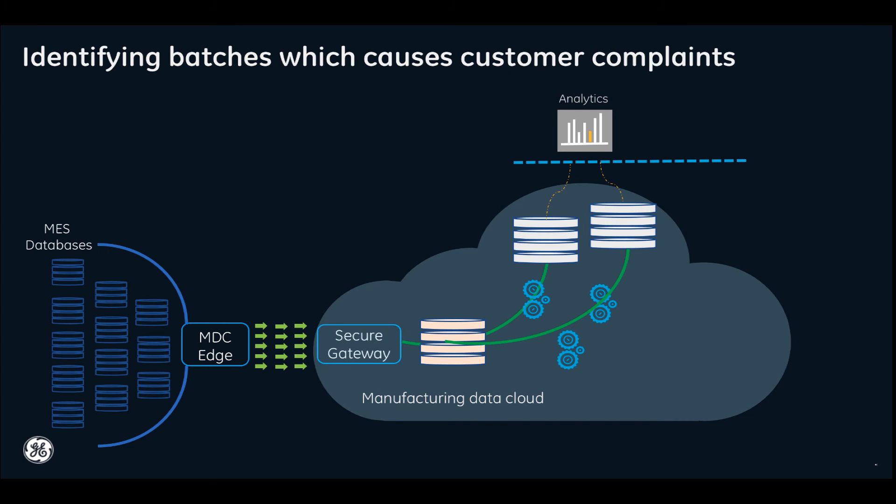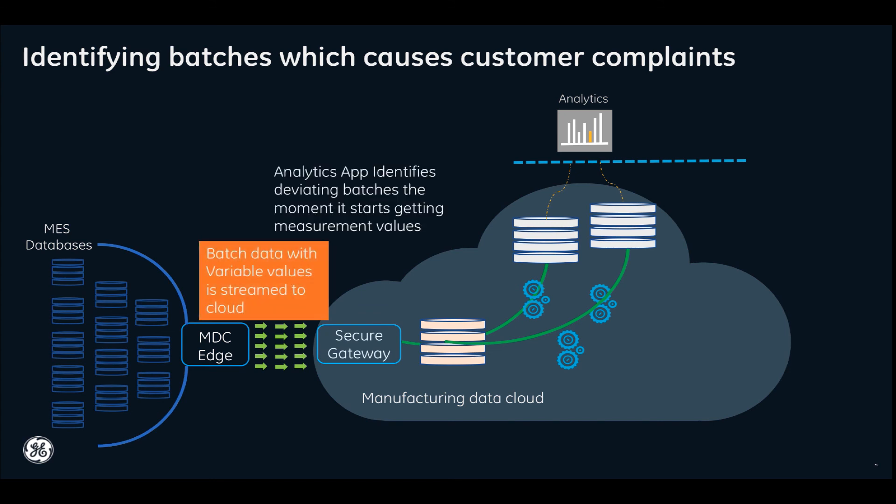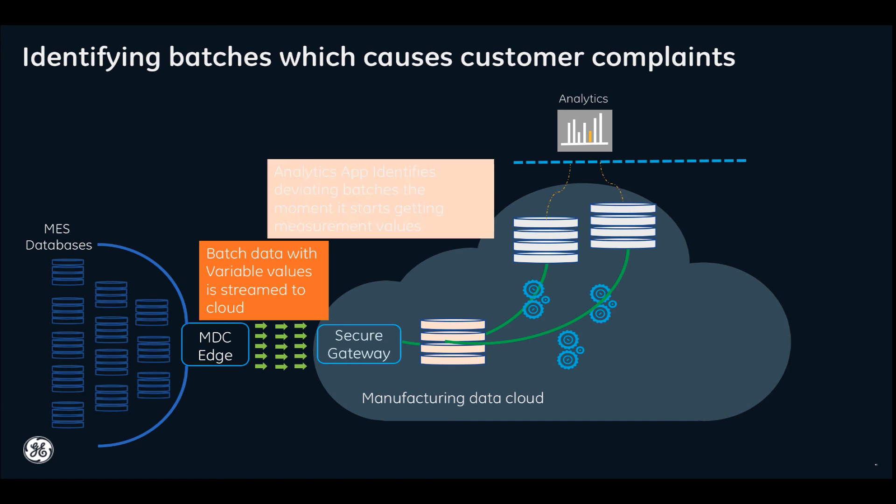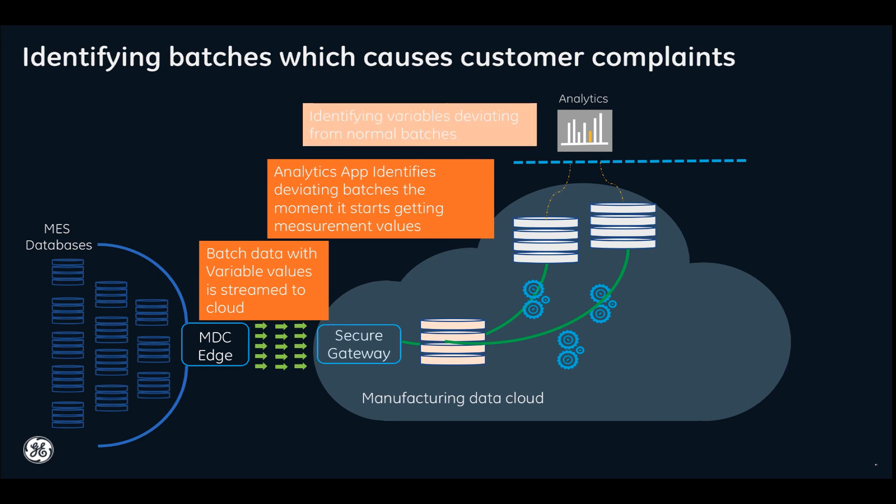From the historic data that was available in MDC, we could create analytics model using unsupervised machine learning techniques. This model was deployed to detect the batches that were produced and the measurements that were taken in real time. The model actually picked up the data and reported if the batch was a suspicious batch which could actually potentially give rise to some customer complaints. The model also gave a list of variables which could have contributed to the problem.